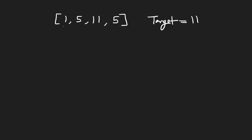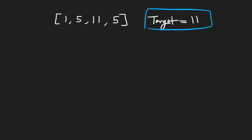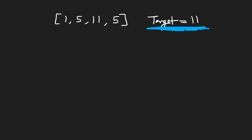As with many problems, let's figure out what the brute force solution would be. We start at the first element, and for every single element that we visit, we have two choices: we can either include this in our sum or we can not include it. We want to determine every single sum we can make with any subset from this given array, and we want to know: does that sum ever equal 11? Because 11 is our target — we sum this up and divide it by two to get 11. So the first choice: we can either choose a one or skip it, so our sum will be either one or zero.